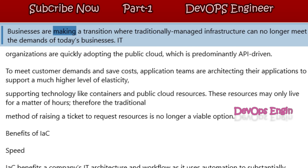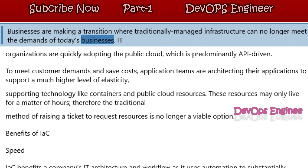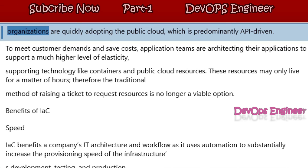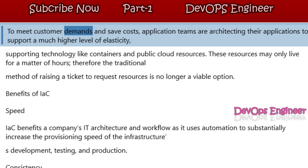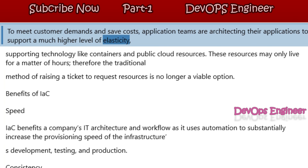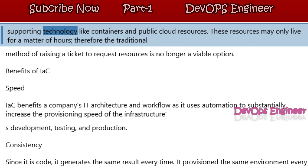Businesses are making a transition where traditionally managed infrastructure can no longer meet the demands of today's businesses. IT organizations are quickly adopting the public cloud, which is predominantly API driven. To meet customer demands and save costs, application teams are architecting their applications to support a much higher level of elasticity, supporting technology like containers and public cloud resources.